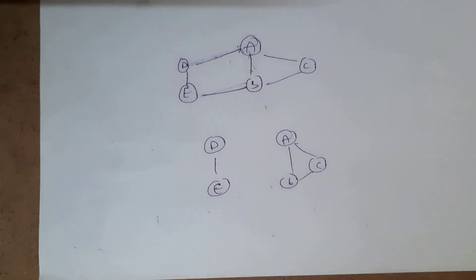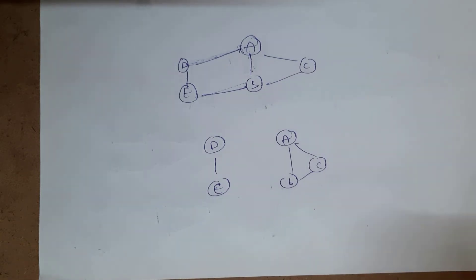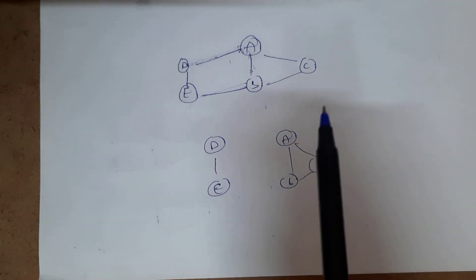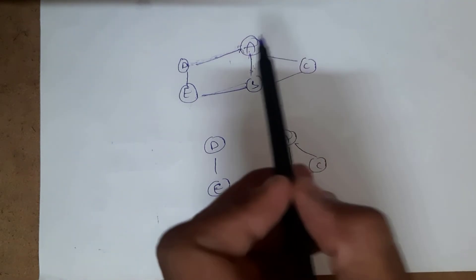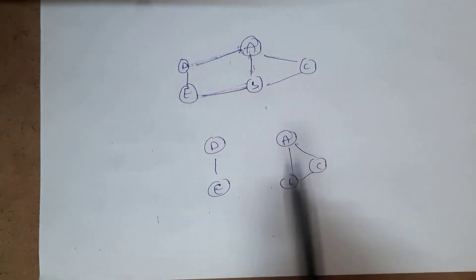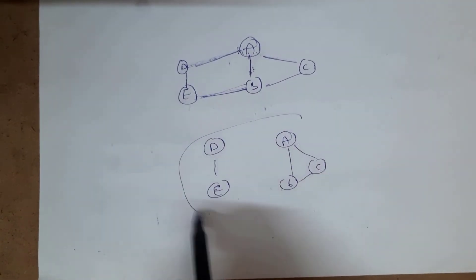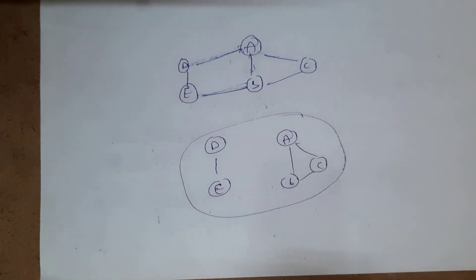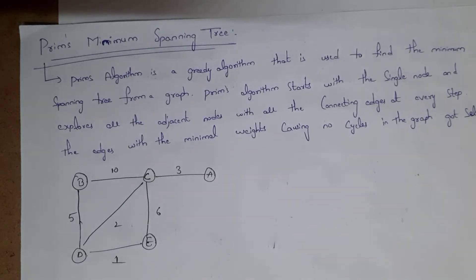You need to remember one thing: we can find a minimum cost spanning tree only for a connected graph. A connected graph means there must be a connection between each and every node. For example, if a graph is not connected, we cannot find a minimum cost spanning tree for it.